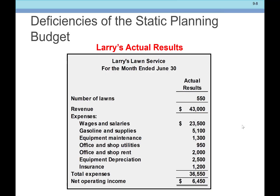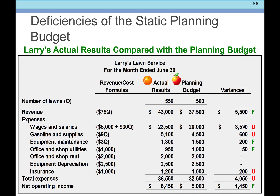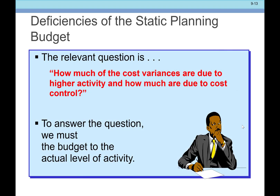Now let's say he actually mows 550 lawns. We'll have different numbers than when we assumed 500 lawns. When we compare, the revenue variance is favorable — of course it is, he mowed more lawns. But does that mean he charged the right amount per lawn, or is it just the number of lawns driving the favorable variance? Looking at wages and gasoline, the unfavorable variances show he spent more than planned — but he should have spent more because he mowed more lawns. So we don't know: is he spending too much, or is it just the fact that he mowed more lawns?